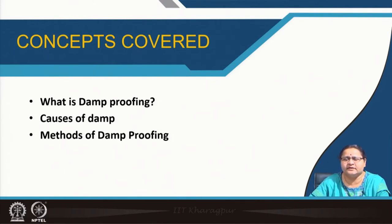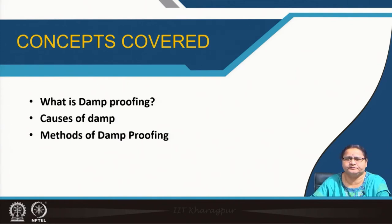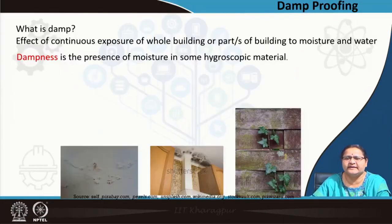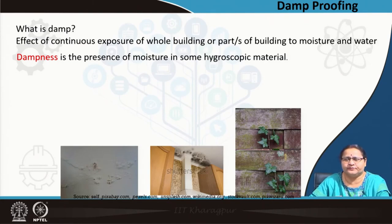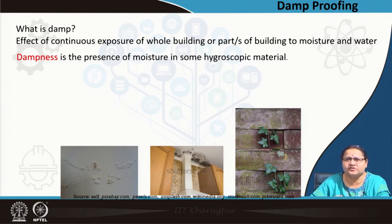In this beginning lecture, we will mention the various methods of damp proofing. As you all know, all building materials are absorbent of water. We try to make our building as impervious as possible, but as you remember in our very first module, we talked of brick which actually absorbs up to 20 percent water. Wood, another building material, also absorbs water. We are looking into constructions where brick is mostly used in foundations.